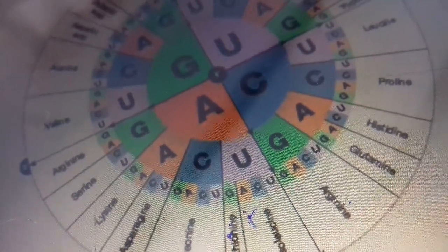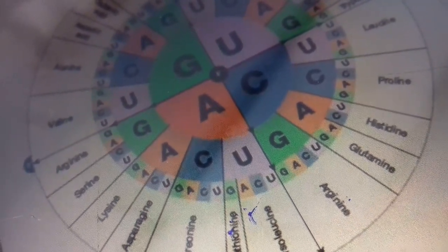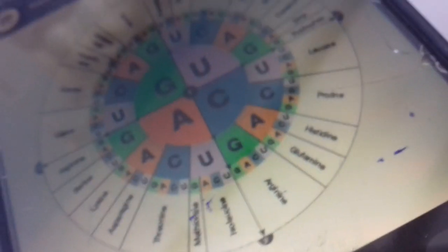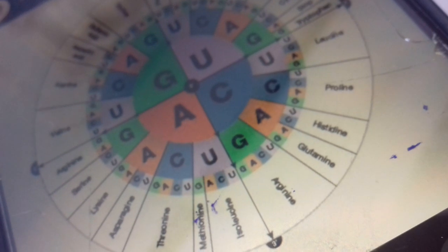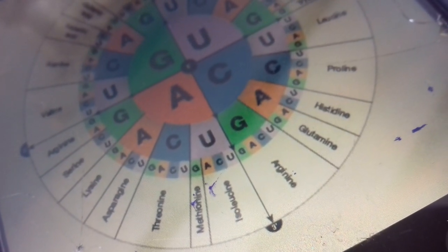Universal genetic code contains 64 codons in which 64 code for amino acid and 3 codes for stop signal.